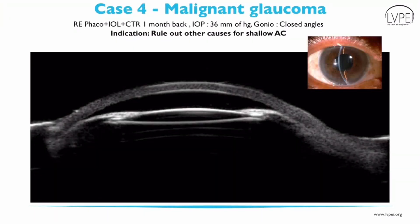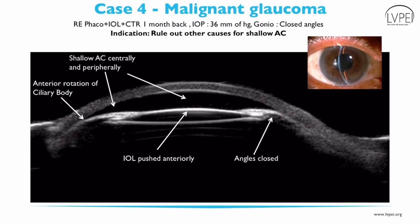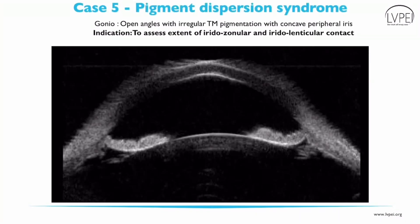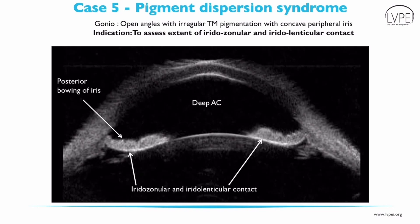This patient presented with high intraocular pressure one month post-cataract surgery. UBM helped in diagnosing malignant glaucoma by showing the intraocular lens pushed anteriorly due to anterior rotation of the ciliary body, with forward push of the iris-lens diaphragm leading to shallow anterior chamber and closed angles. In another patient, UBM confirmed the diagnosis of pigment dispersion syndrome by showing deep anterior chamber with posterior bowing of the iris. It helps in assessing the extent of irido-zonular and irido-lenticular contact, thereby guiding the exact site for iridectomy.